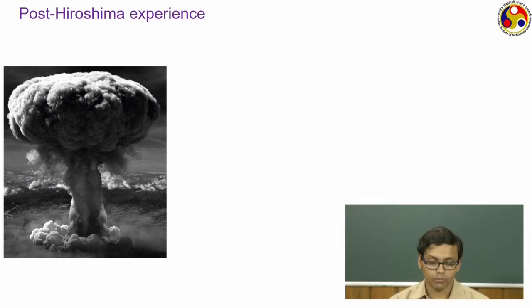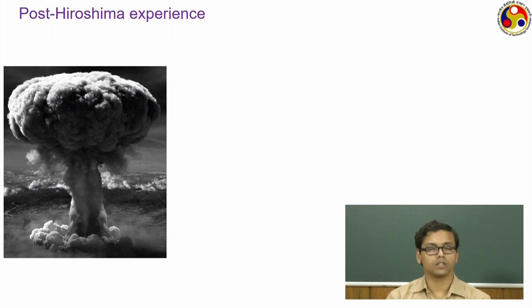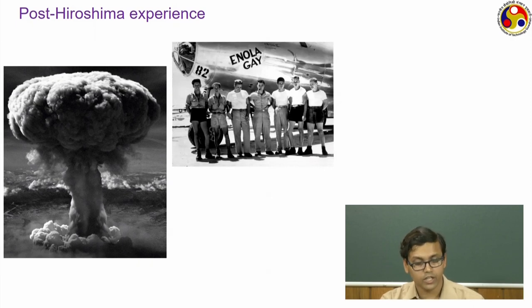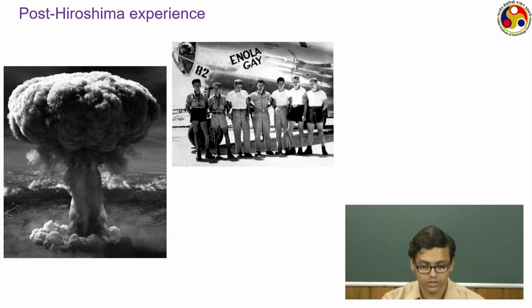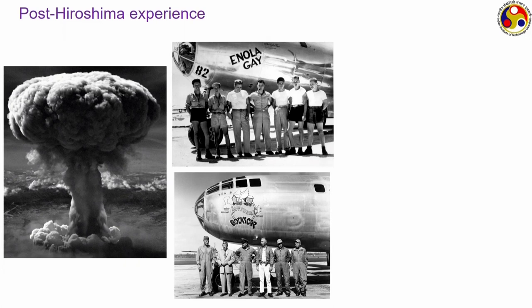Now we come to purely nuclear-based accidents and incidents which led to significant radiation hazards. We have to go back to 1945 and Hiroshima. Everyone has probably seen the image of the plume formation following the atomic bombing of Hiroshima on the 6th of August 1945 — a huge amount of energy released by the nuclear bomb called 'Little Boy.' The Enola Gay was the aircraft that carried Little Boy and dropped it on Hiroshima, and Boxcar was the aircraft that carried the plutonium bomb towards Nagasaki on 9th August.